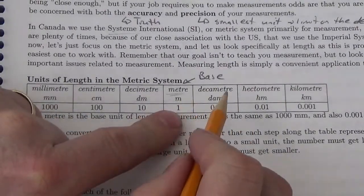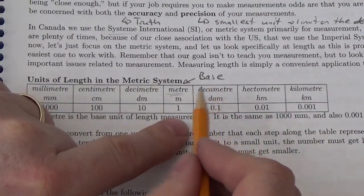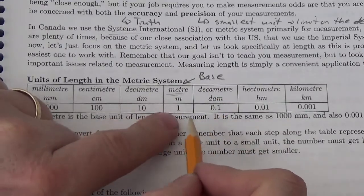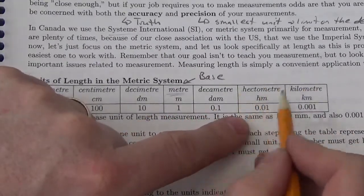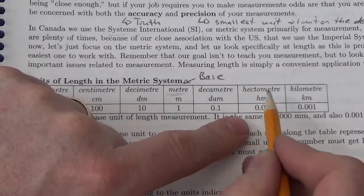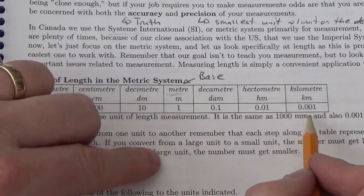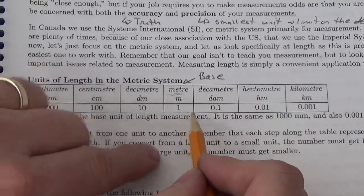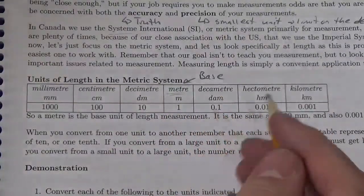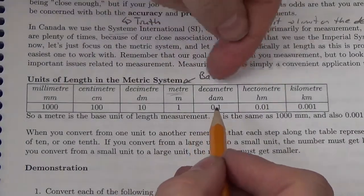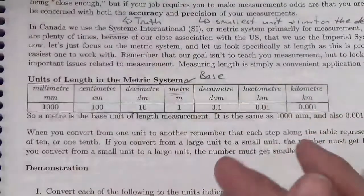Going the other way — decameter, hectometer, kilometer — when I look at a decameter, I need a tenth of that to equal a meter, so there are 10 meters in a decameter. A hectometer: a hundredth of a hectometer is one meter, so I'd need 100 of those. For a kilometer, there are 1,000 meters. So that's why all these measurements are basically equal to one meter. As you convert to a smaller unit, the number gets larger; if you convert to a larger unit, the number gets smaller.